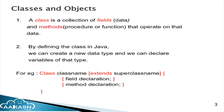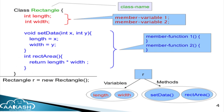Whatever is in square brackets is optional, meaning I can have an empty class which is a valid Java class and I can create an object using it. Here is a class named Rectangle. In red we have two member variables, length and width. In blue we have two methods: setData, which initializes the length and width, and rectArea, which returns the area by multiplying length and width.